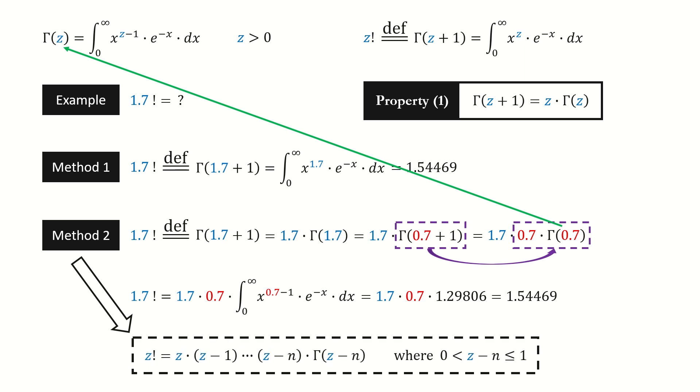This formula means no matter how large a real number z is, we can always reduce it to a number between 0 and 1. This formula is very useful in our future videos. In the next slide, I will derive this formula.